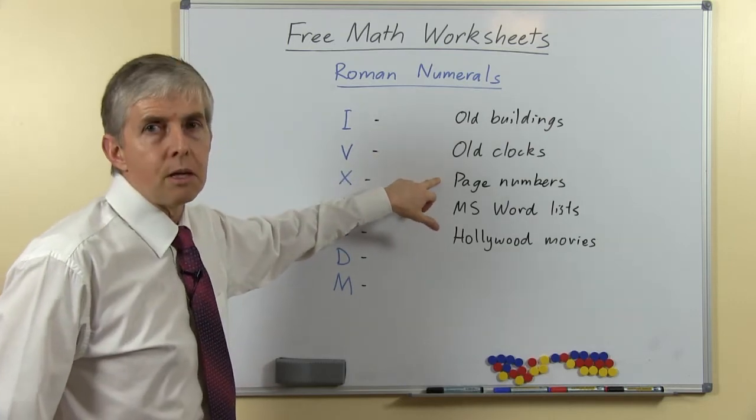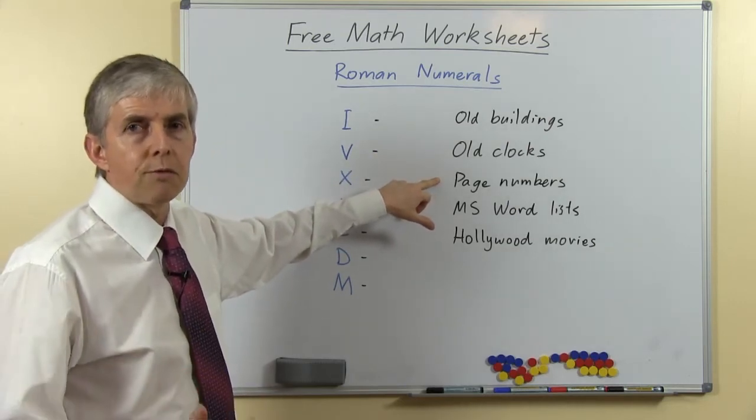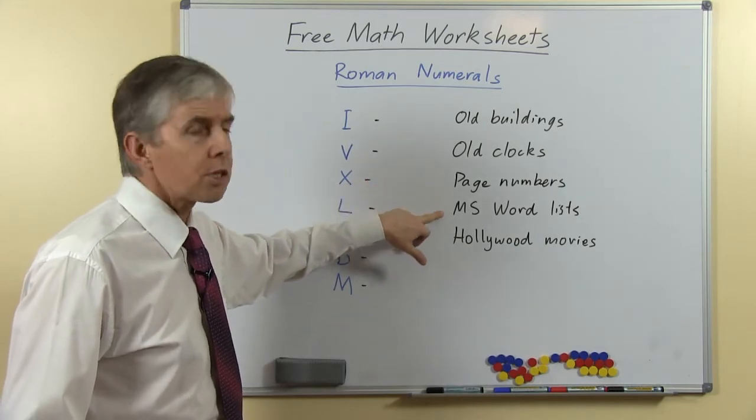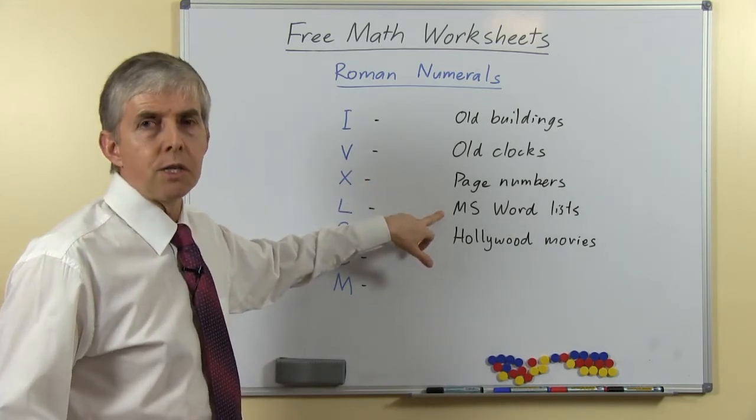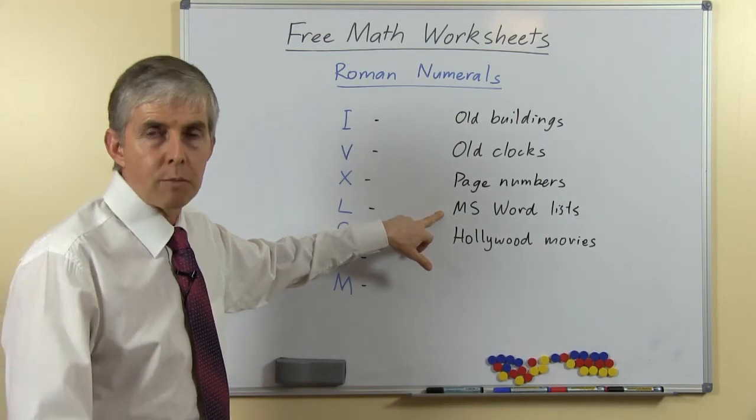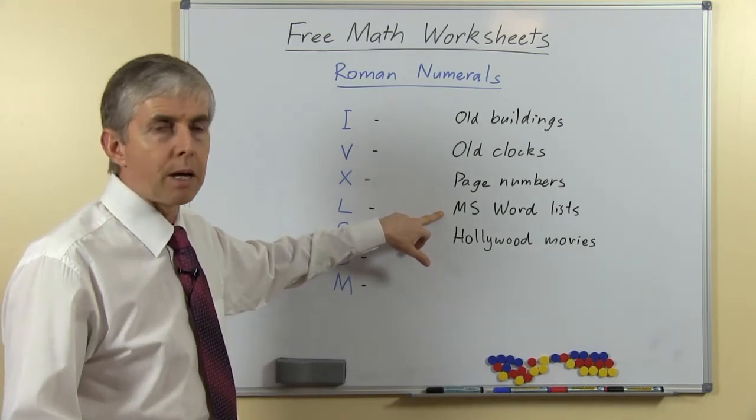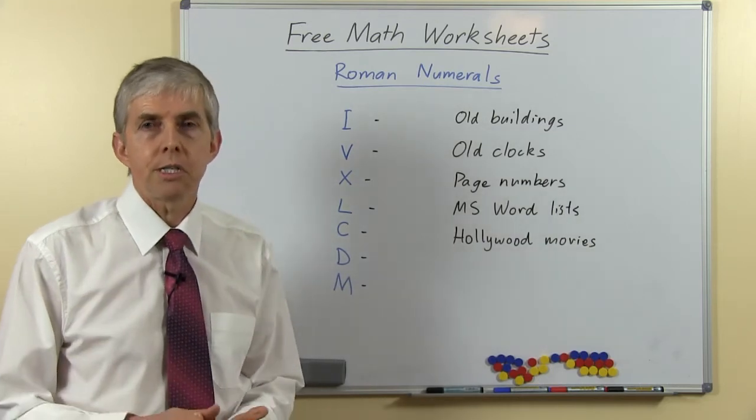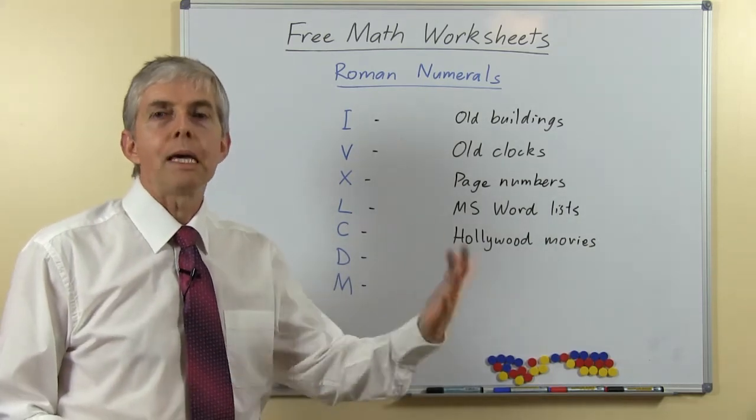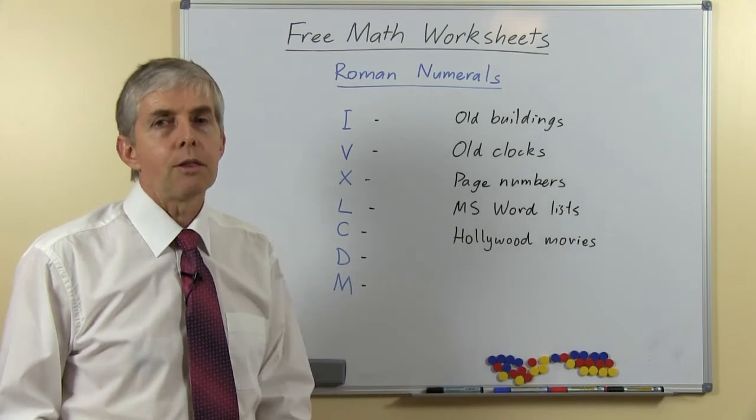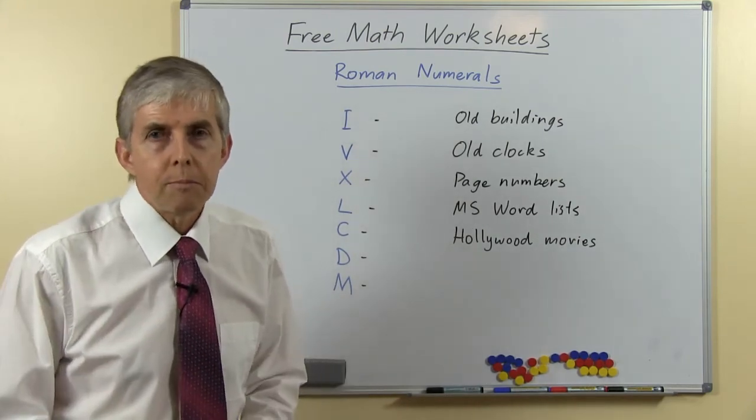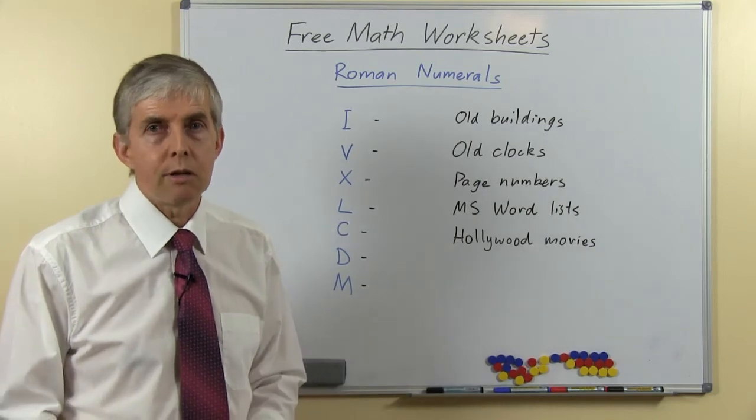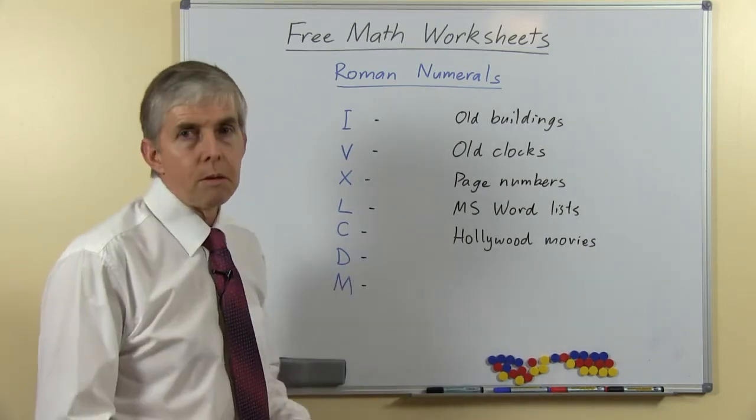Page numbers in the front part of a book, the preface of a book, are often numbered using Roman Numerals. Microsoft Word interestingly enough still has that option for numbering lists and pages. And even Hollywood movies—I was interested to see what would happen when we came to the year 2000 and thought maybe Hollywood producers would stop using Roman Numerals, but they didn't, they kept on going. So there are some modern uses.